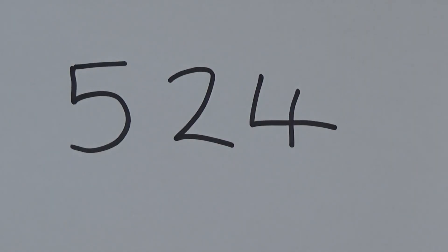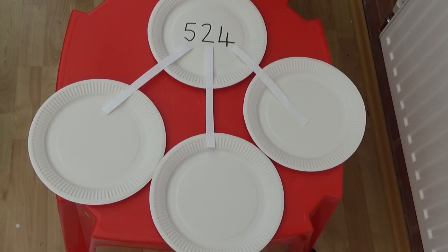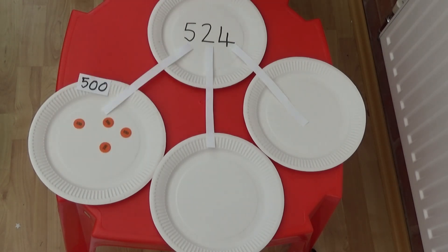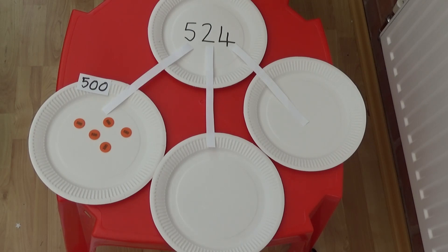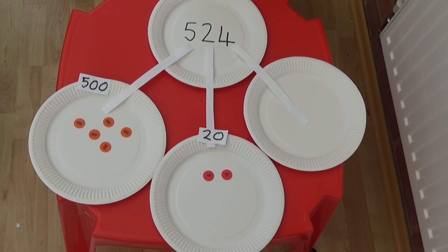Here we have the number 524. I am going to show how it can be represented using the part-whole model and on a baseboard. I am making the number 524, so I need to start with the 5. In this number it is worth 500, so I will need five 100 counters. The next digit is 2 and as it is in the tens column, I will need two tens, so 2 here has a place value of 20. The third digit is 4. As it is in the ones column, I will need four ones. The 4 here has a place value of 4.